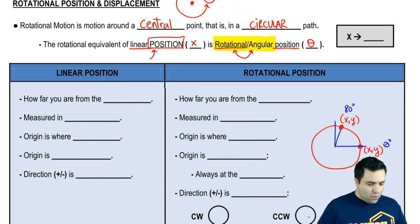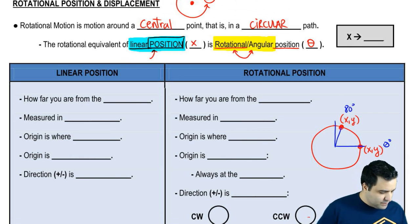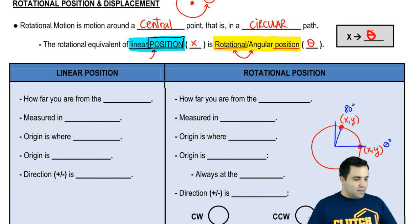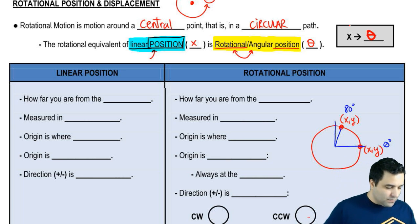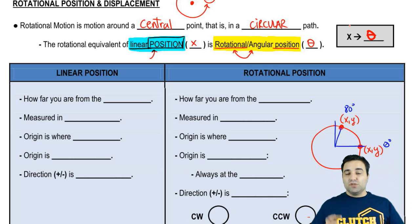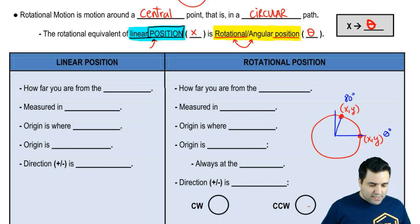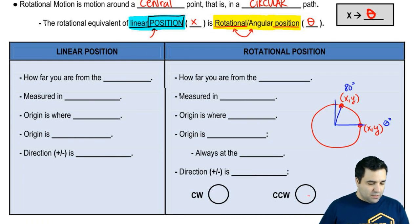Whereas in linear motion you used x, in rotational motion we use theta. So what I'm going to say here is that x becomes theta. The x equivalent in rotation is theta. Later on, you're going to get some equations where, old equations, but instead of using x, we're going to use theta. So let's look a little deeper into the differences between the two.